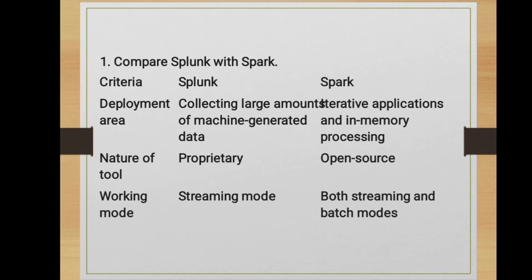The first important question: how is Splunk different from Spark — compare Splunk with Spark. Spark is also a big data science and database management tool. Splunk is deployed for collecting large amounts of machine-generated data, whereas Spark is used for iterative applications and in-memory processing. Splunk is a proprietary tool, but Spark is open source. Splunk works in streaming mode, whereas Spark supports both streaming and batch modes.